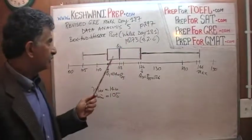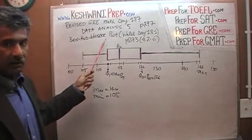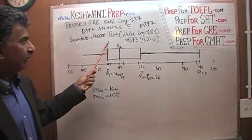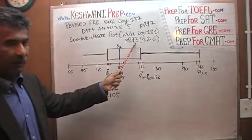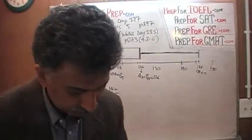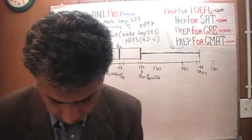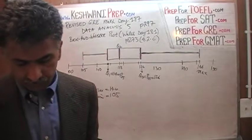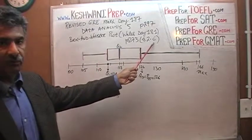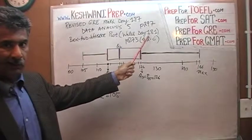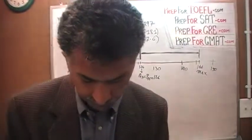Before you continue watching this video, I want to make sure you have watched the video that deals with what is known as a box and whisker plot. I already covered this topic on day number 181. On day 181 we did the problem on page 273 — problem number 4.2.6. If you have not watched lesson 181, go back and watch that one first so that this is easier to follow.